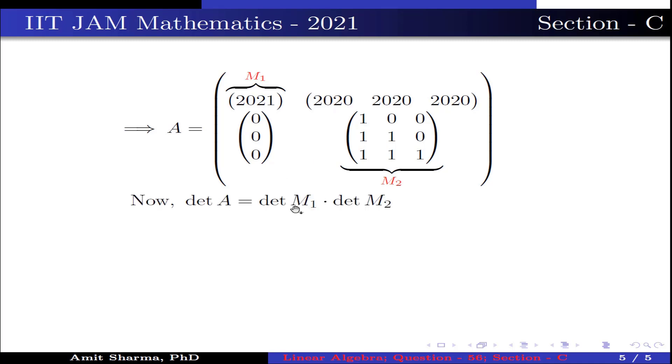Now the determinant of A is determinant of M1 times determinant of M2, which is 2021 times 1, because M2 is a lower triangular matrix. Now the product is 2021. Therefore determinant of A is 2021.